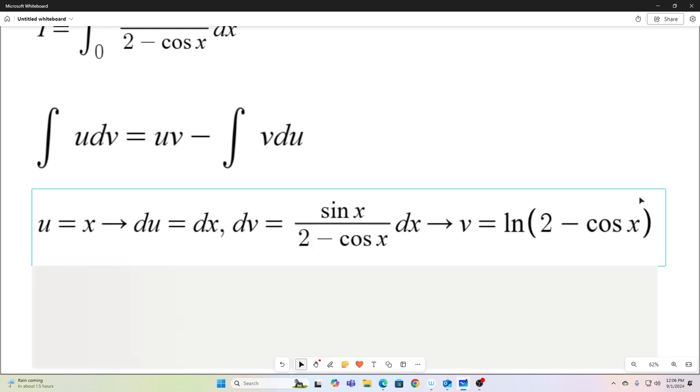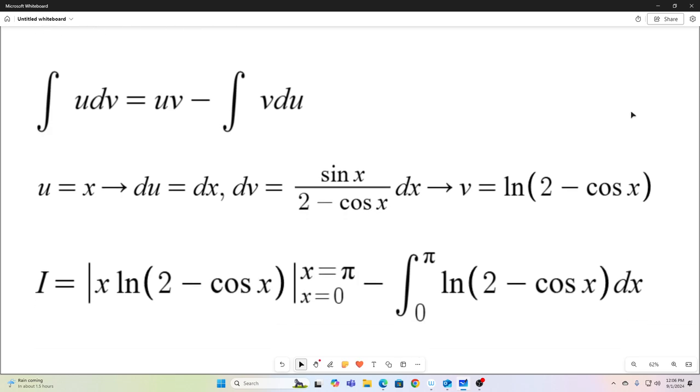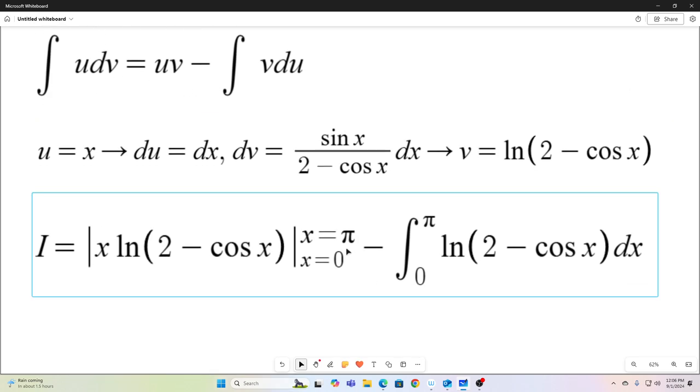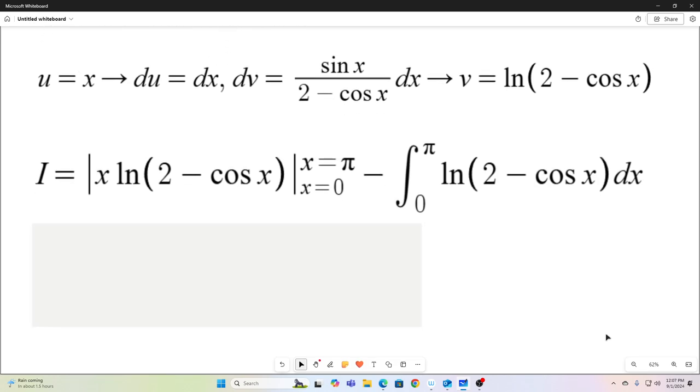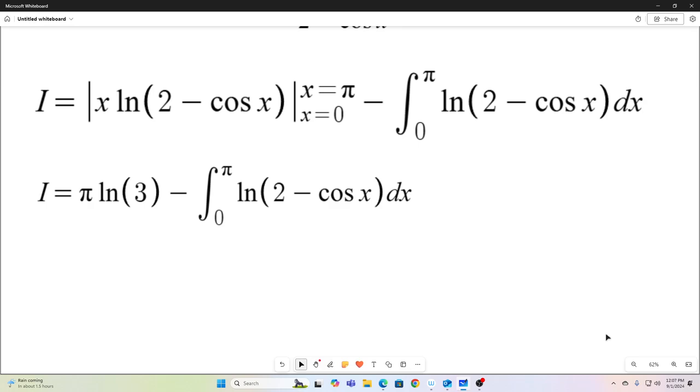Plugging that into our formula gives us this. So we have u times v evaluated from 0 to π, because those were our bounds of integration. You can see that the 0 term is going to go away because of this x right here. And the π term, let's see, if we plug in π for cos x we will get negative 1. So minus a negative 1, that's natural log 3 times π. So that part will be π natural log 3 minus this integral. All right, so I just wrote that down right there. That's what our new expression for I becomes.